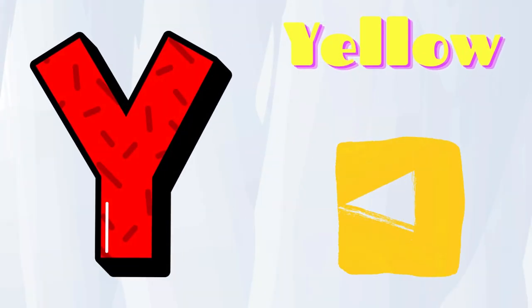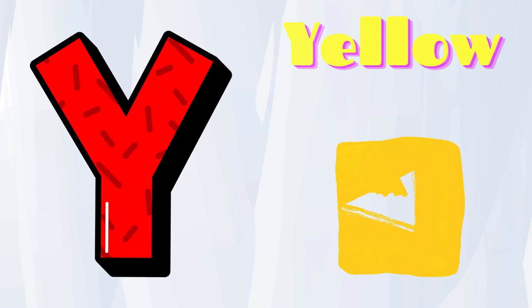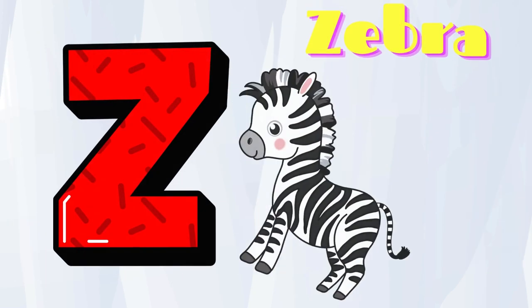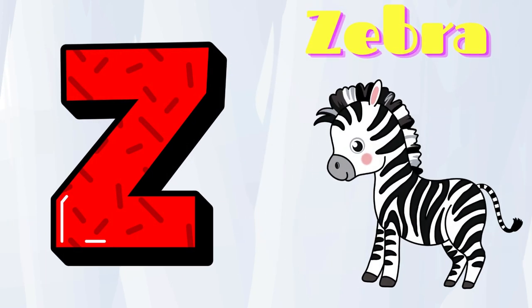Y is for yellow, y-y-yellow. Z is for zebra, z-z-zebra.